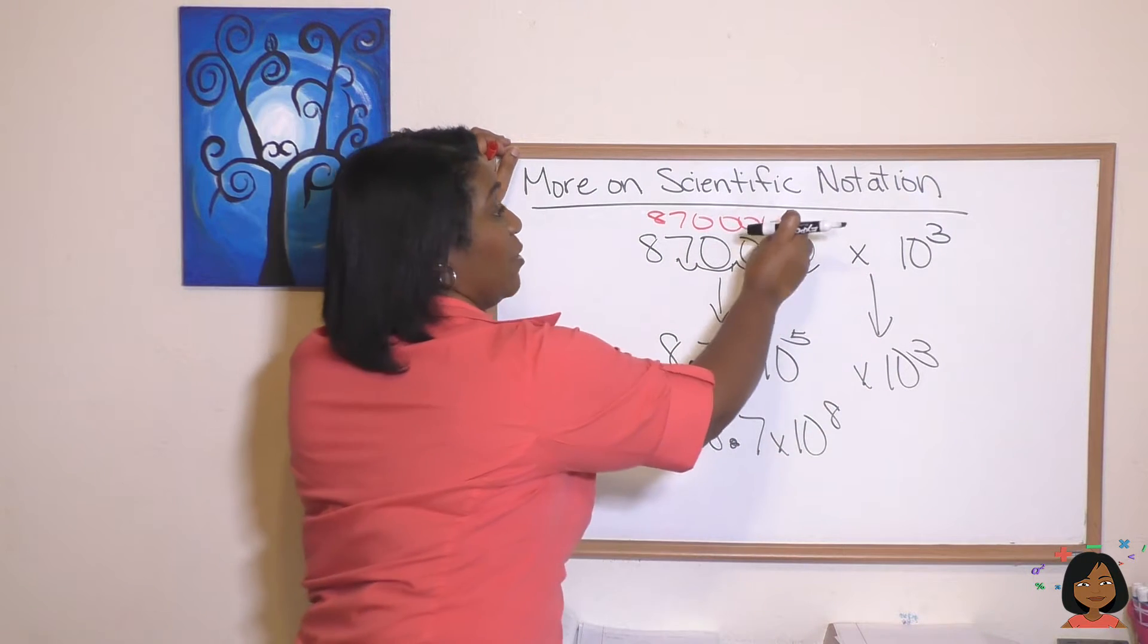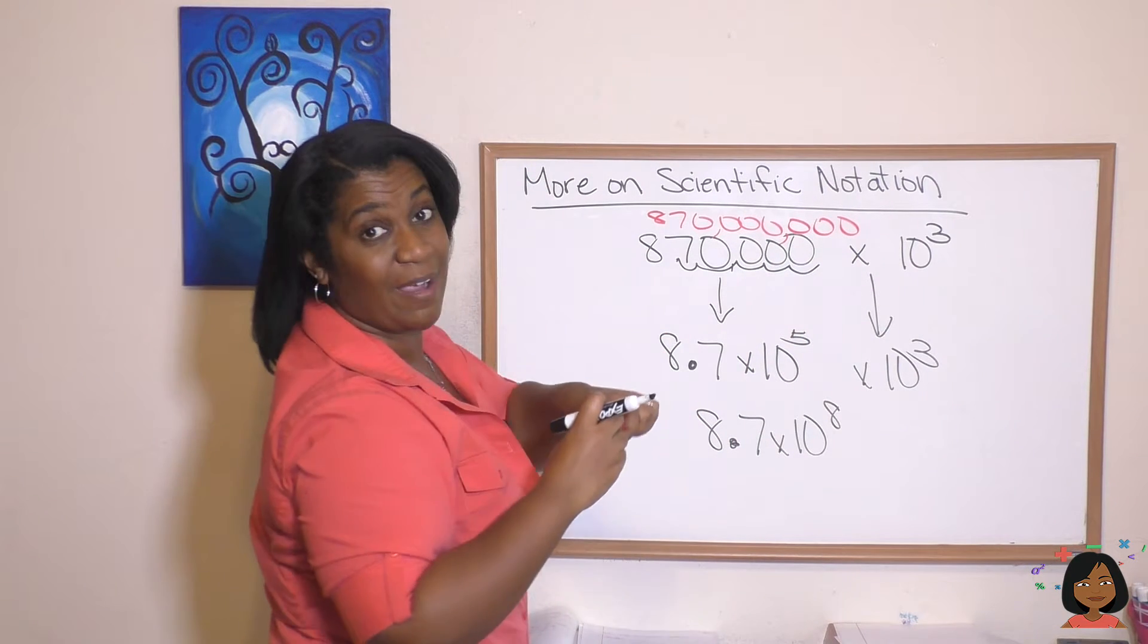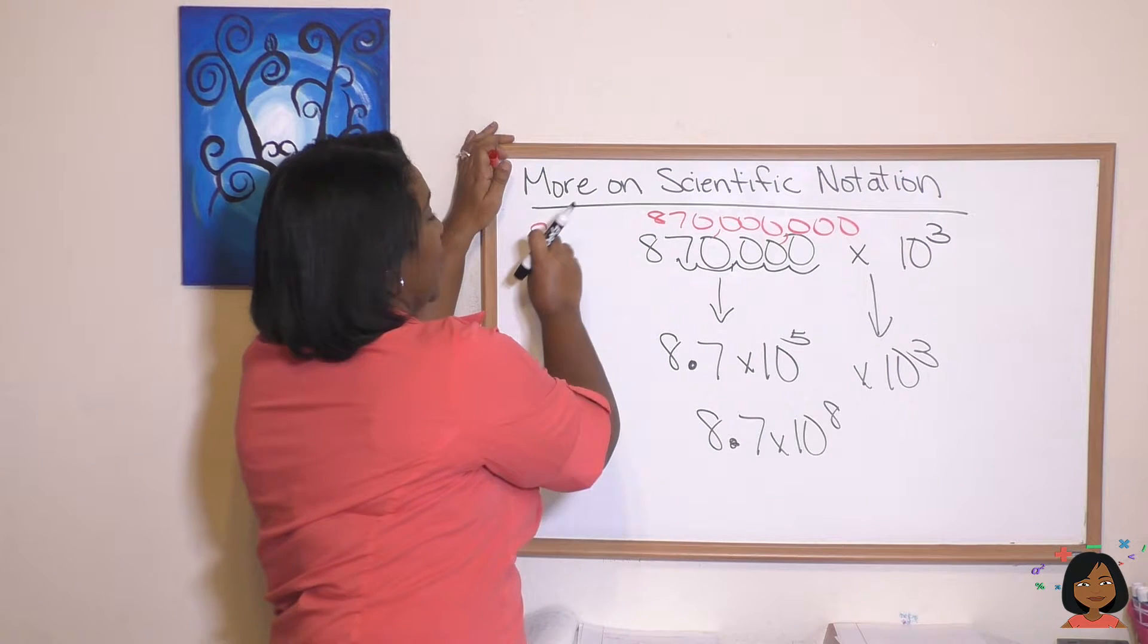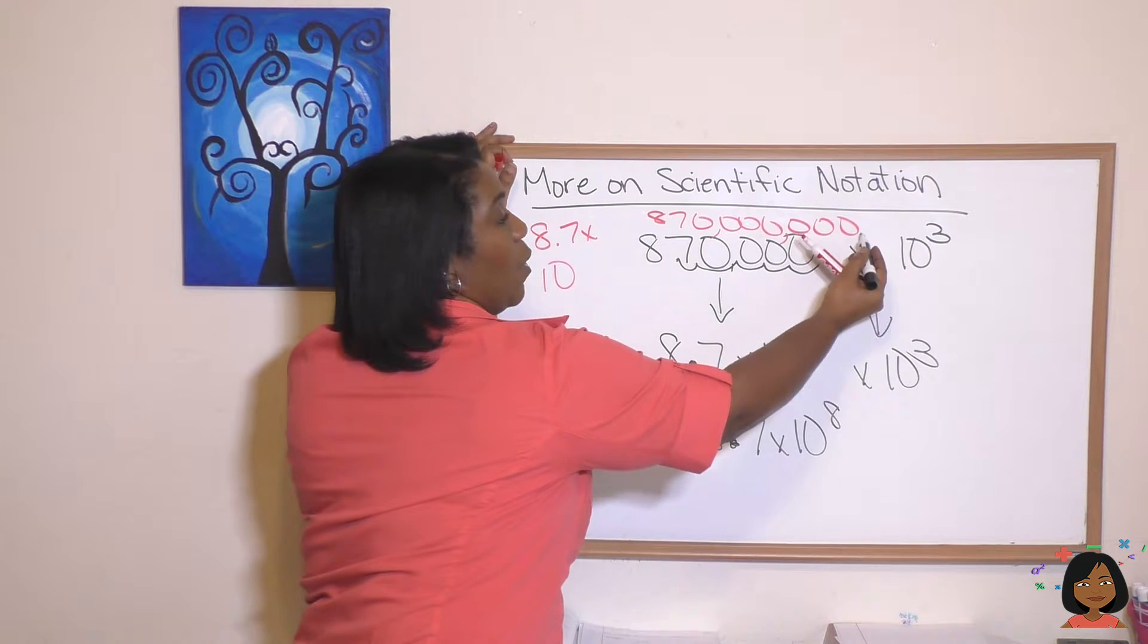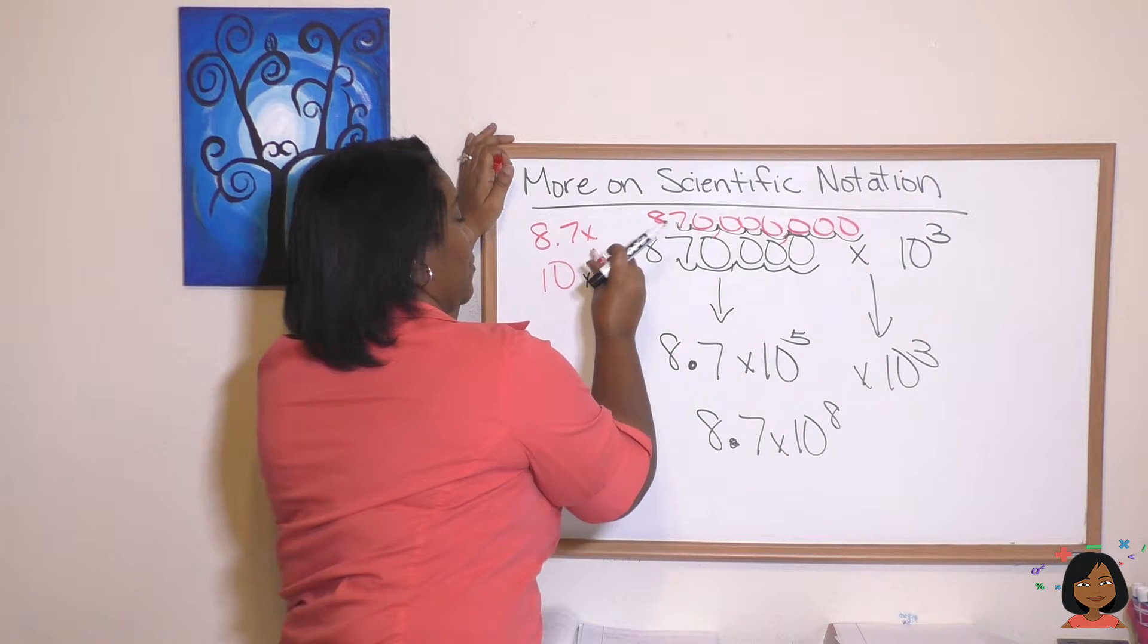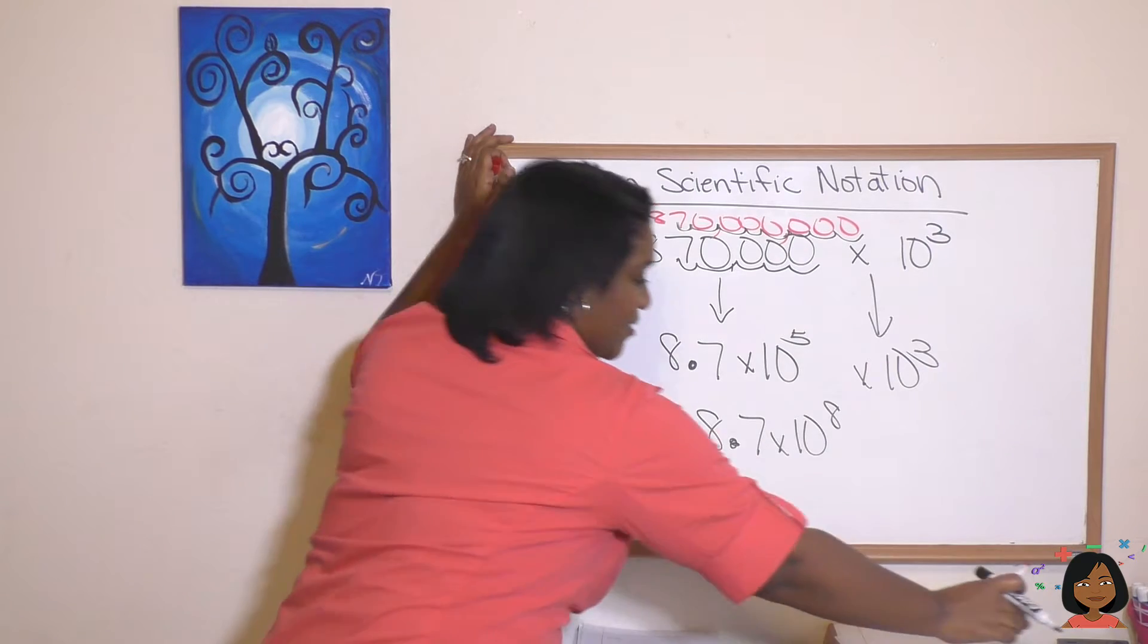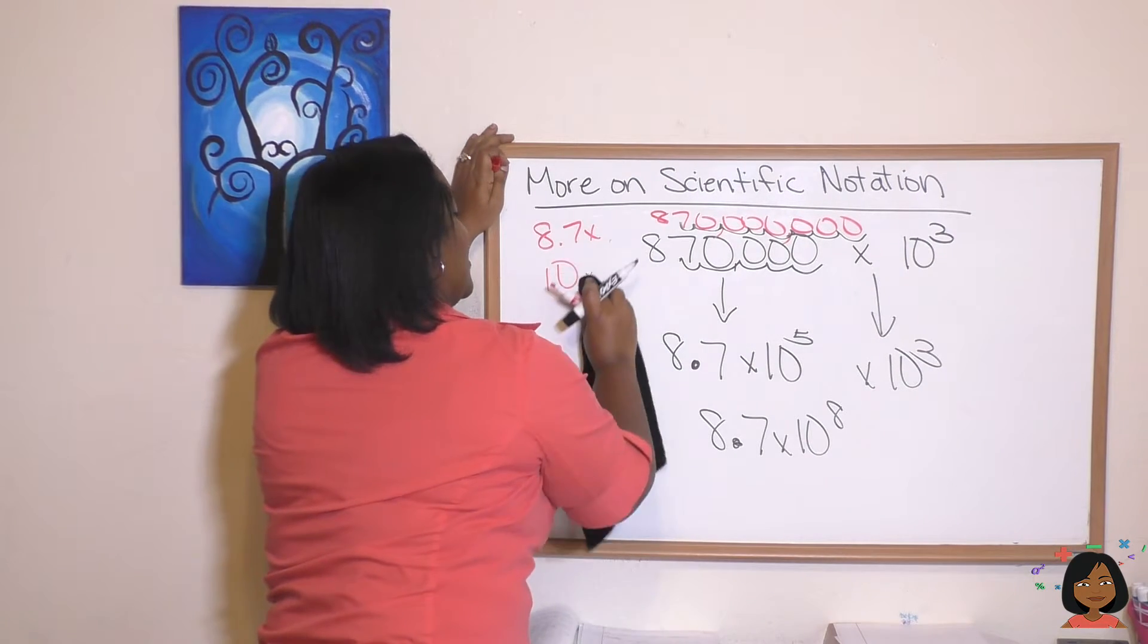So our final number would look like this, and to write that number in scientific notation, we would write 8.7 times ten to the—one, two, three, four, five, six, seven, eight—ten to the eight. Oh, I wrote it twice; I just saw what I did. Here we go: 8.7 times ten to the eight.